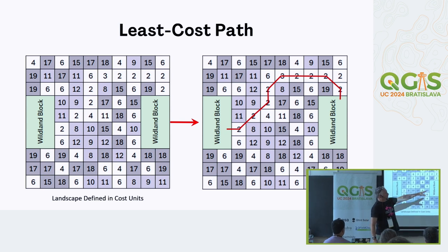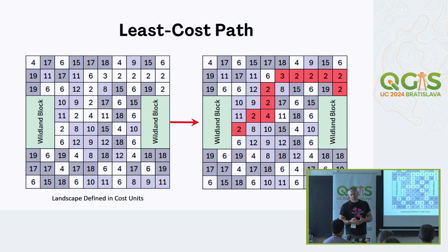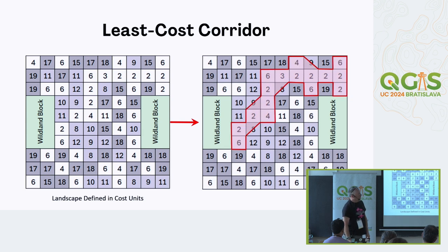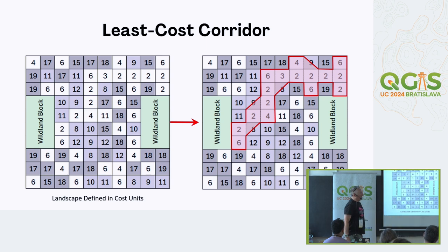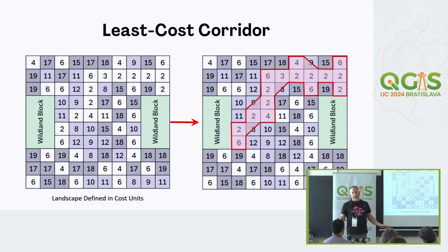Historically, least cost path analysis was used - not the shortest path but the one with least cost between two habitat areas. The problem is it's only one pixel wide - in this case 30 meters - which doesn't represent reality. Least cost corridor takes a wider swath, but in our case we weren't even interested in modeling connectivity between specific areas; we wanted to measure general connectivity across the entire study area irrespective of target pixels.